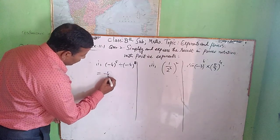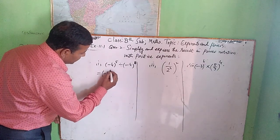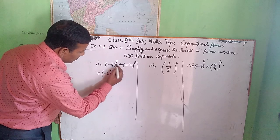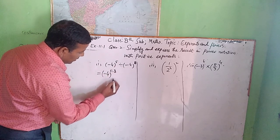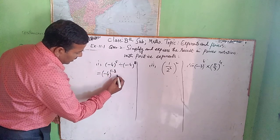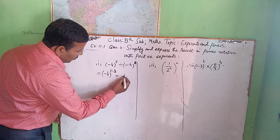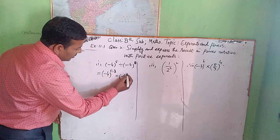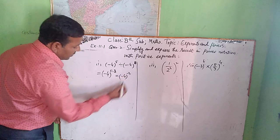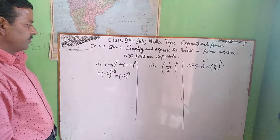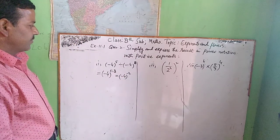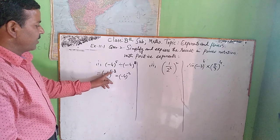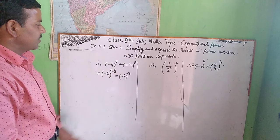So we write minus 4 raised to power 5 minus 8. Since 5 minus 8 gives us minus 3, we get minus 4 raised to power minus 3.